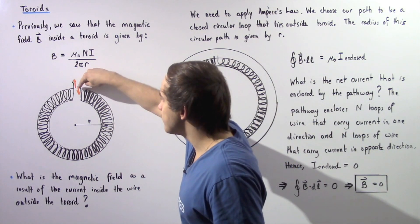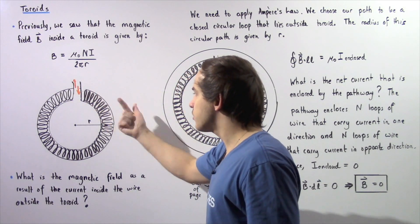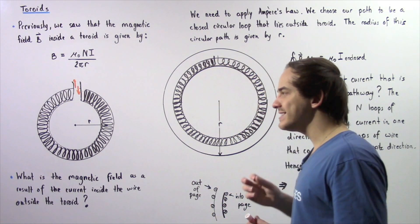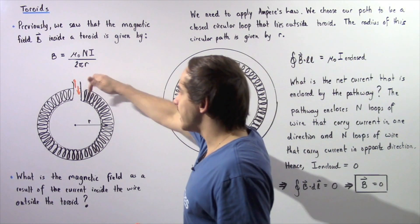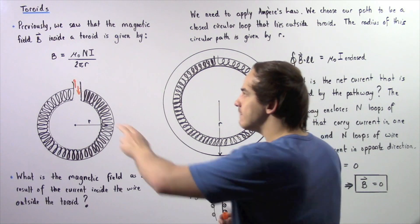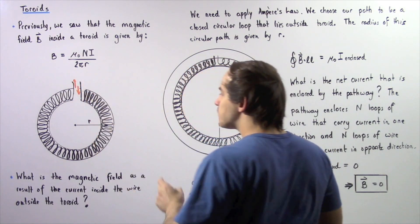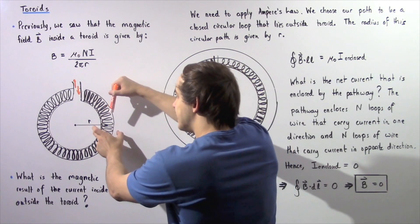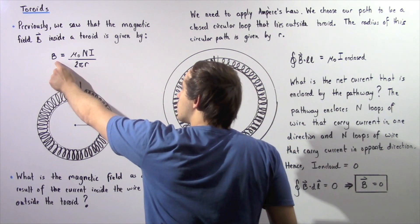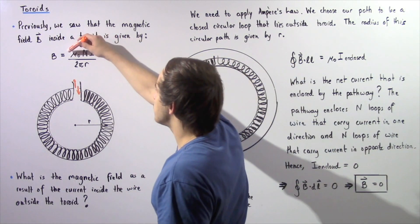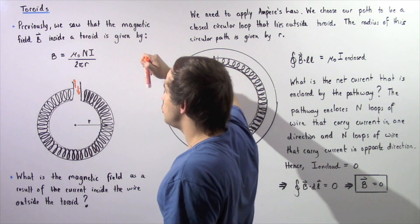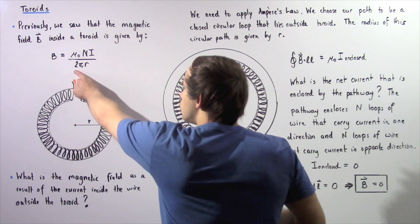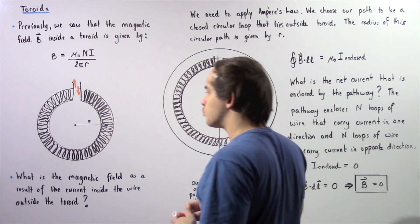This is our toroid in which we have an electric current I traveling through our loops of wire. Suppose the number of loops is given by uppercase N. The magnetic field B is given by an equation where R is the distance from the center of our toroid to the region we're examining. The magnitude of B equals mu naught times N times I, divided by 2πR.